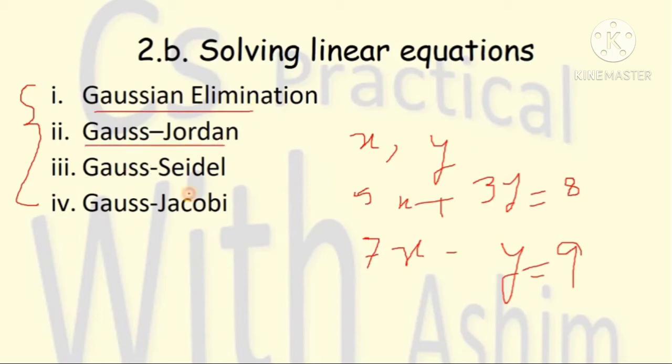Using all of these methods: Gaussian Elimination, Gauss Jordan, Gauss Seidel, and Gauss Jacobi. These four methods we can use to solve. Let's look at our playlist of these methods. What we need to solve: procedure, algorithm, source code, dry run - we can see our playlist.